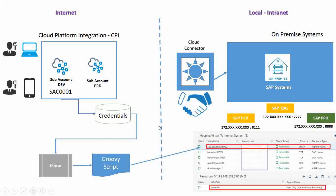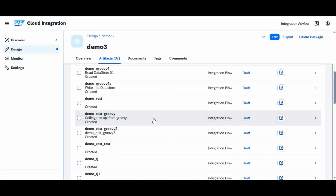For this, a lot of firewall settings are required, so it is not recommended in reality. But just to understand how we can achieve API consumption via Groovy script, for the understanding purpose, I am creating this video. Now we will go to the iFlow directly and I will explain the steps I took to consume this API via Groovy script. I have already created one iFlow and will explain it one by one.